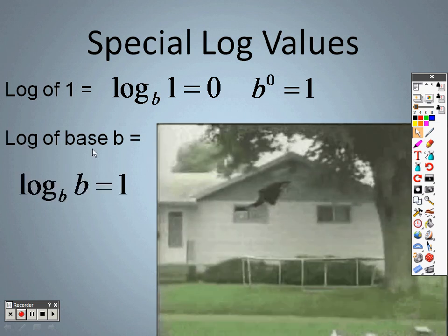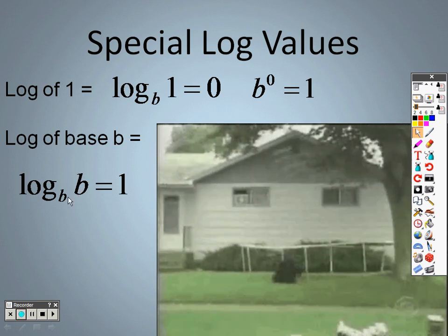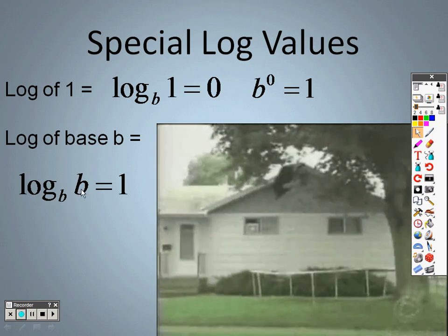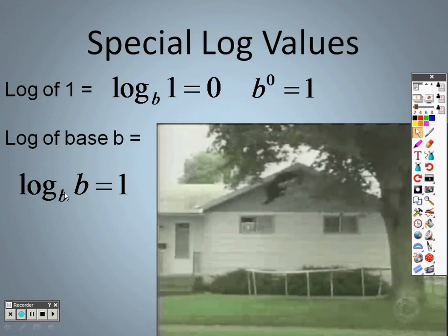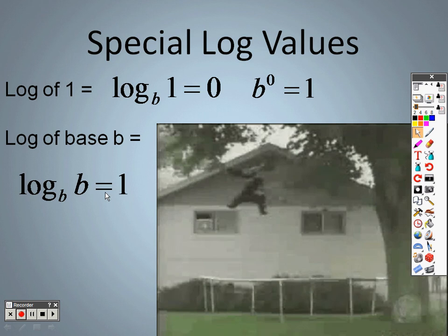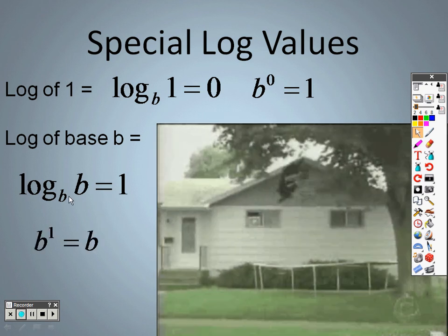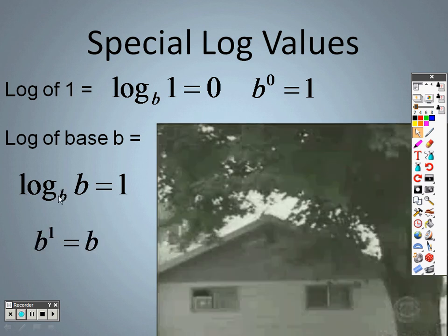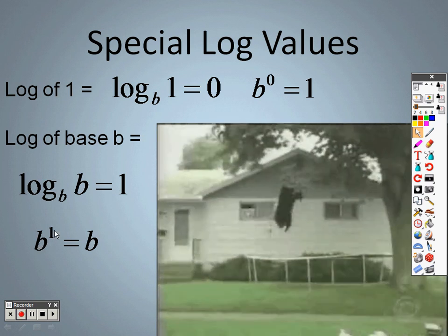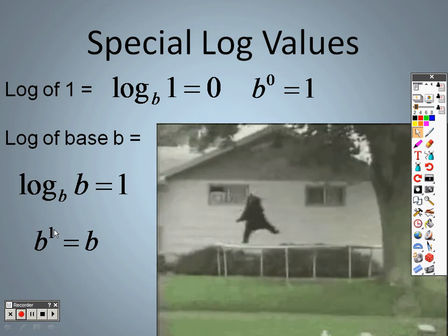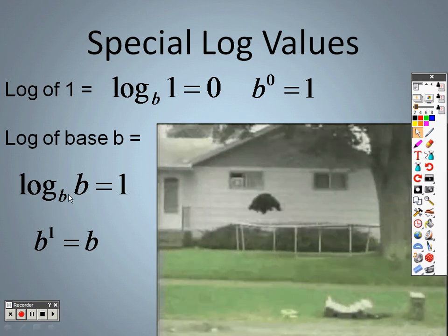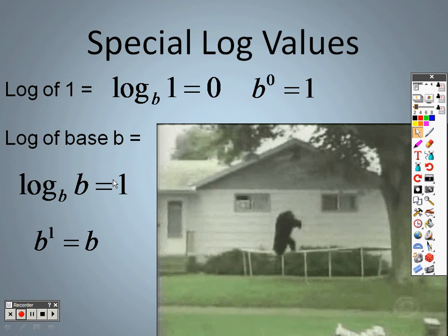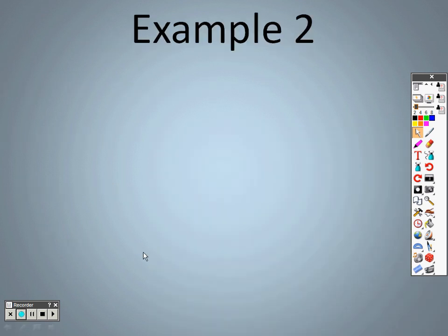The other special value: log base b of b — when the two items are the same, like log base two of two, log base three of three, or log base ten of ten — your answer is going to be one. The reason is when you rewrite it, it's b to the first power, and anything to the first power is itself. So when you have the same item in both places, your answer is one.